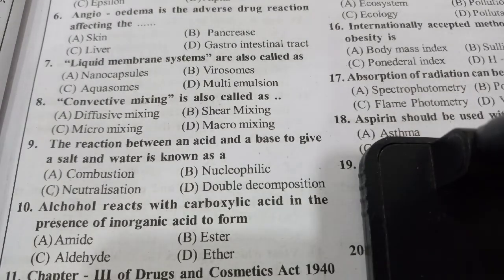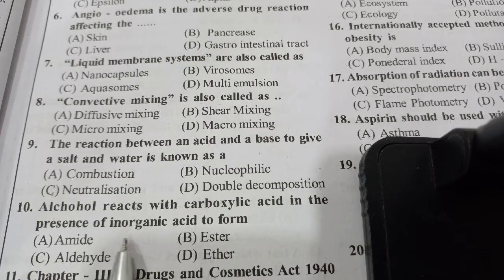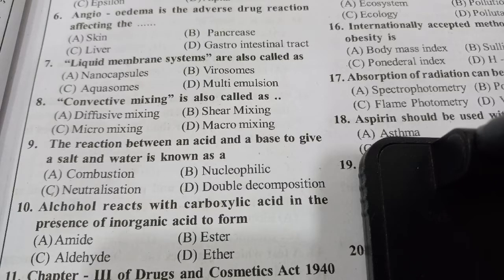Alcohol reacts with carboxylic acid in the presence of an inorganic acid to give: amide, ester, aldehyde, or ether? Esters are produced when carboxylic acids are heated with alcohols in the presence of an acid catalyst. The catalyst is usually concentrated sulfuric acid.